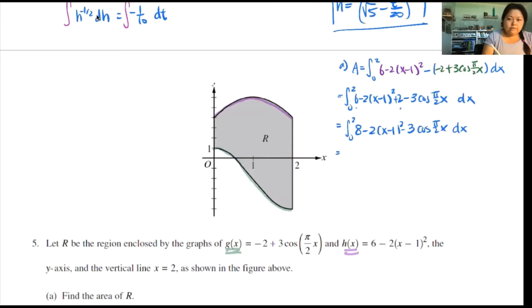I can combine the 6 and the 2. So I get 0 to 2, 8 minus 2(x minus 1) squared minus 3 cosine of pi over 2x dx. Now take the anti-derivative. I get 8x minus 2, your x minus 1 to the third power over 3. The coefficient of x is 1, so I don't have to do anything with that. Minus 3, the anti-derivative cosine is sine of pi over 2x. Coefficient of x is pi over 2, multiply by the reciprocal, 2 over pi.